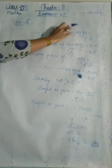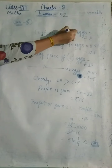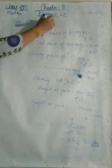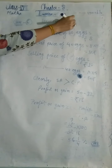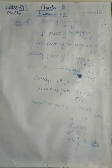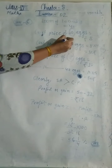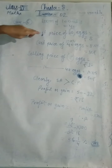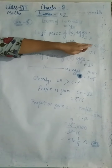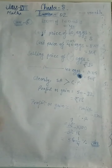To equalize quantities, find the LCM of 10 and 8, which is 40. For cost price: multiply by 4, so CP of 40x = 8 × 4 = Rs. 32. For selling price: multiply by 5, so SP of 40x = 10 × 5 = Rs. 50.